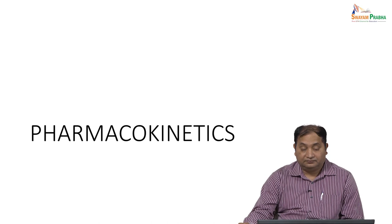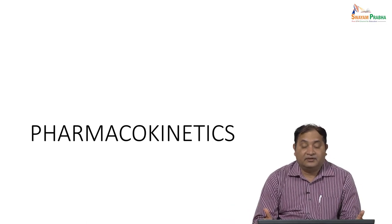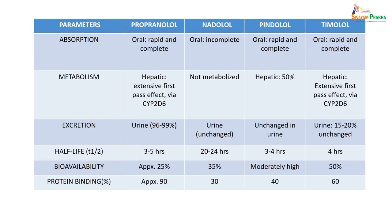Looking at pharmacokinetic properties of older beta blockers — propranolol, pindolol, nadolol, timolol: when given orally, propranolol has rapid and complete absorption; nadolol has incomplete absorption; timolol and pindolol have complete absorption. Propranolol is metabolized by cytochrome 2D6; nadolol is not metabolized; pindolol has 50% hepatic metabolism; timolol is also metabolized by cytochrome 2D6. For excretion: 99% of propranolol is excreted in urine; nadolol and pindolol are excreted unchanged; for timolol, 15–20% is excreted unchanged in urine.